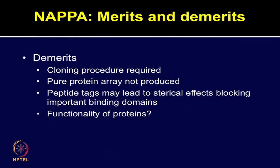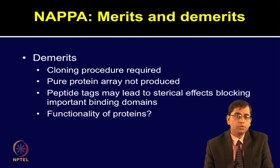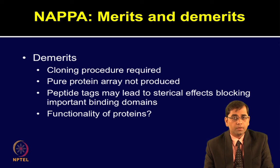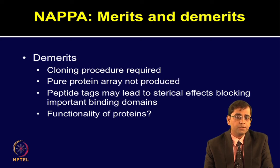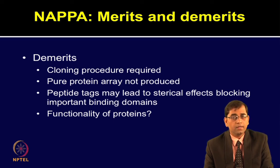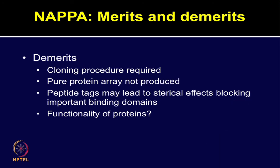Despite several advantages, NAPPA also has certain limitations. You need to rely on a cloning procedure which is very tedious, or you may have to obtain clones from repositories. There is also concern about whether a pure protein is produced, because cDNA printed on the chip synthesizes the protein — so there is coexistence of both DNA and proteins on the chip. The peptide tags added for the capturing procedure may lead to steric hindrance, which could be important for binding domains. The functionality of proteins still remains a question for any of the cell-free expression based methods. NAPPA provides various applications similar to other protein arrays including detection of interactions with proteins and other biomolecules.